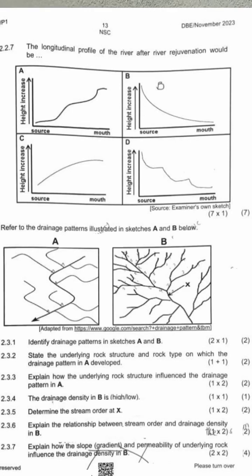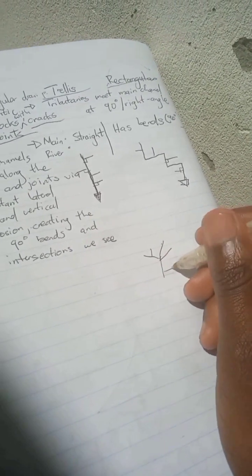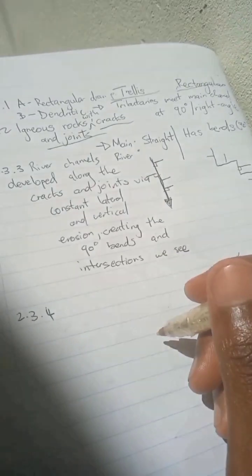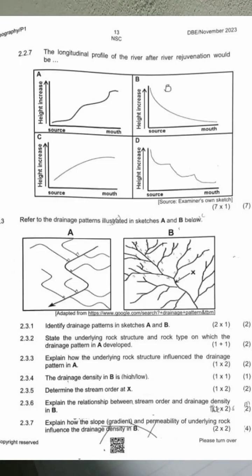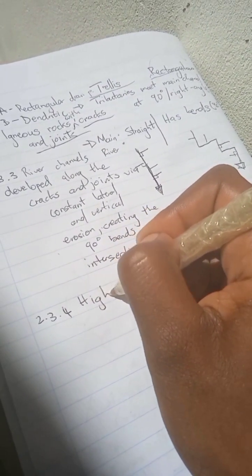In question 3.4, the drainage density in area B is high. Drainage density is the number of streams per unit area — you look at how many streams, channels, and tributaries there are. Because B has a lot of streams and tributaries, the drainage density is high.